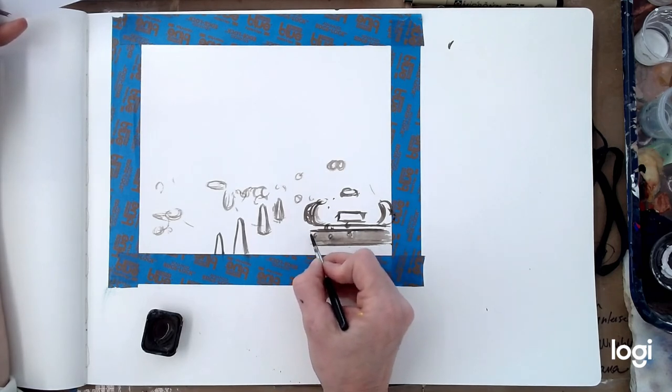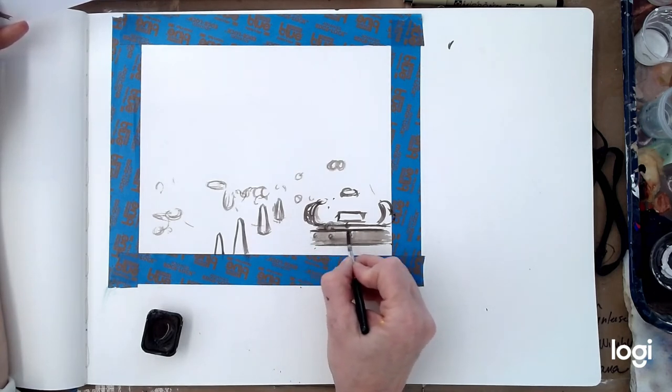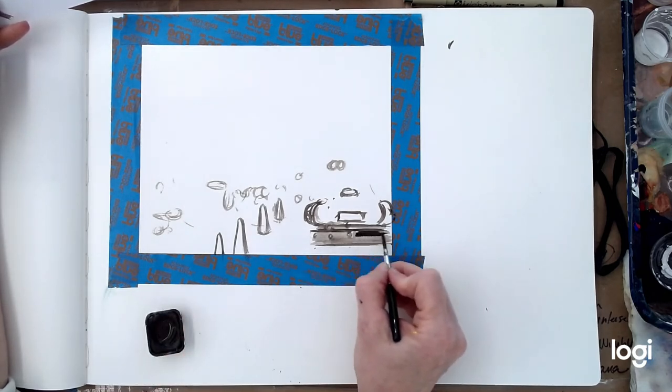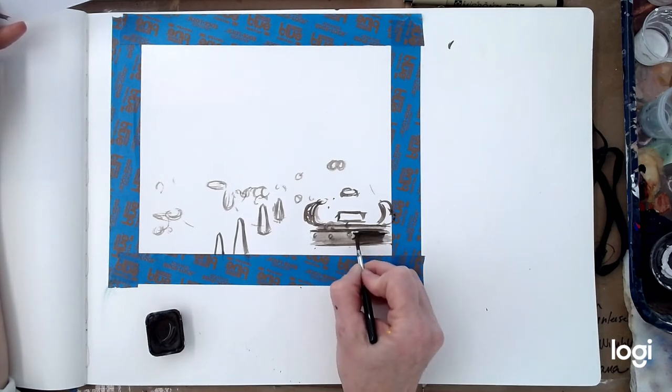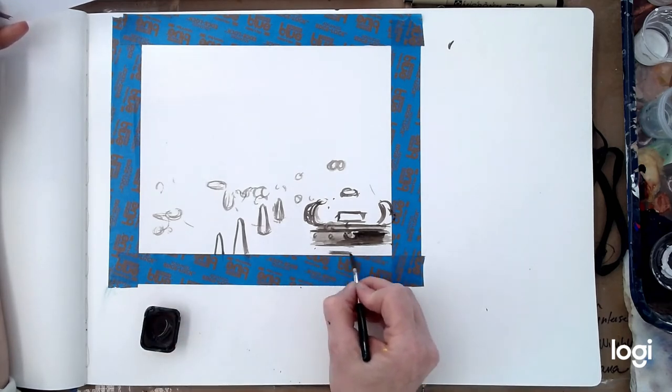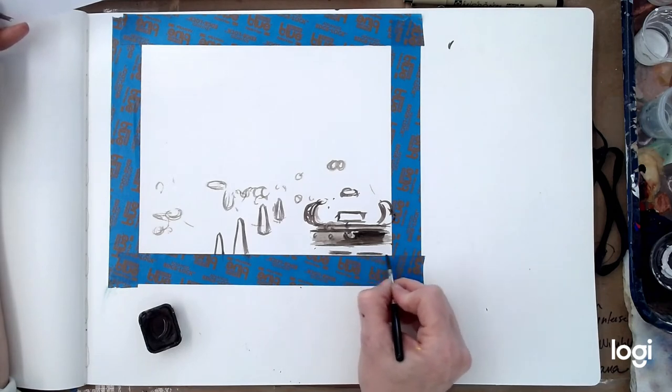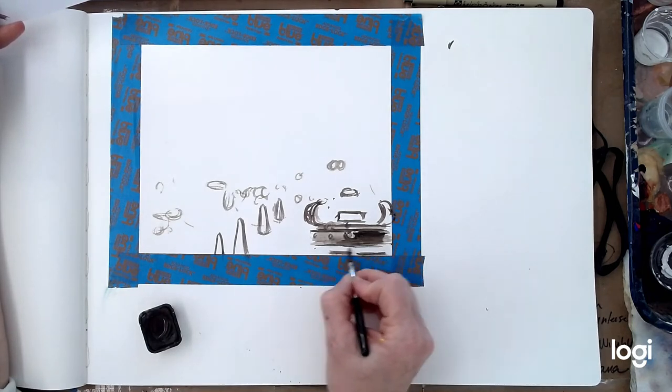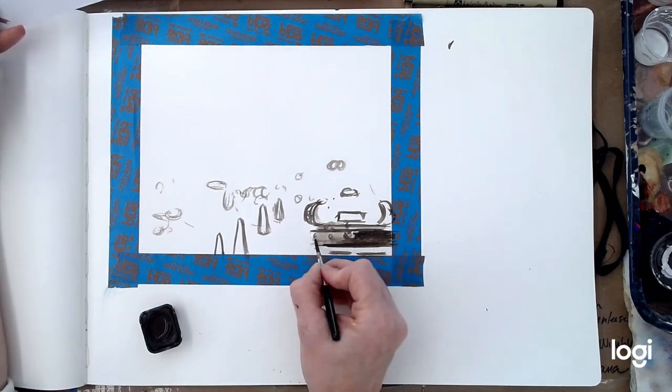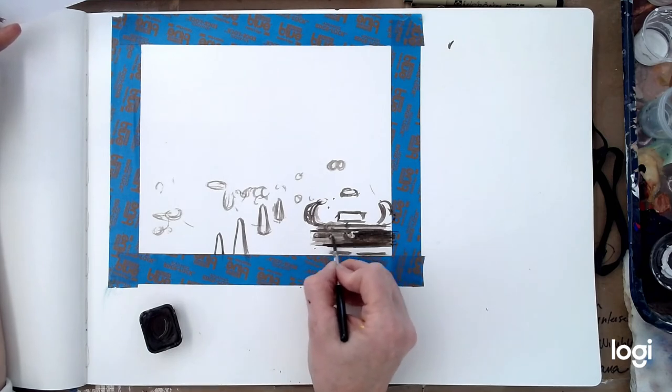When I was a student there were all those documentaries, not videos back then they were just films, of artists in their studios. Like Lucian Freud and stuff, they'd always have this big can of brushes. I always think to myself someday I'll be a real artist and I'll have a big can of brushes. Of course you become an artist and you realize that you're just going to keep using the same brush every day. Big can of brushes is just for show or it's just failed brushes that you tried but can't bring yourself to throw away or give away. Or maybe you just want to have that can, I don't know.